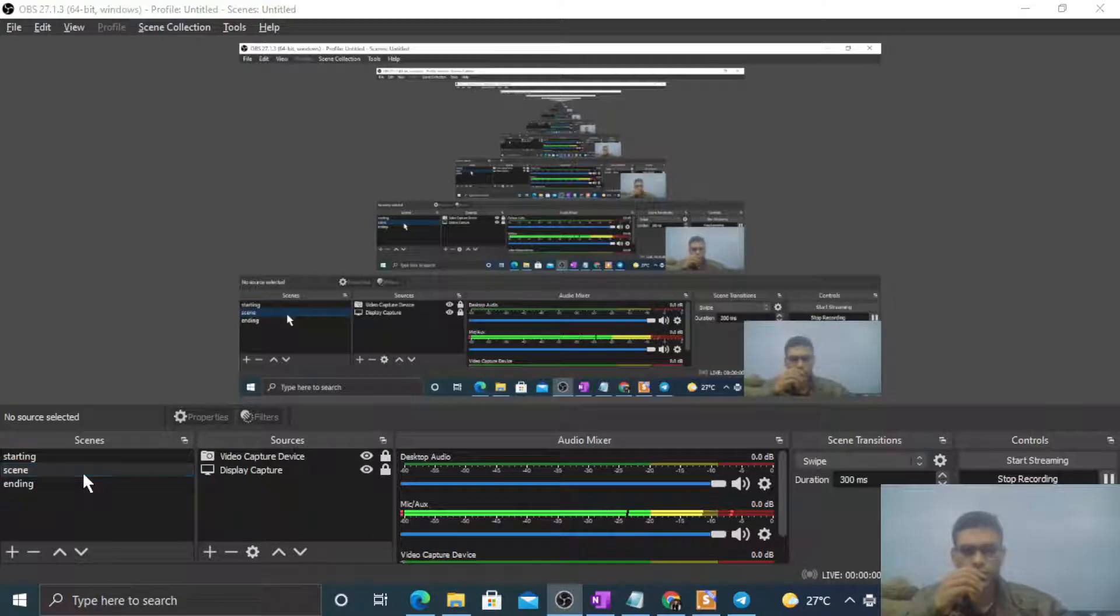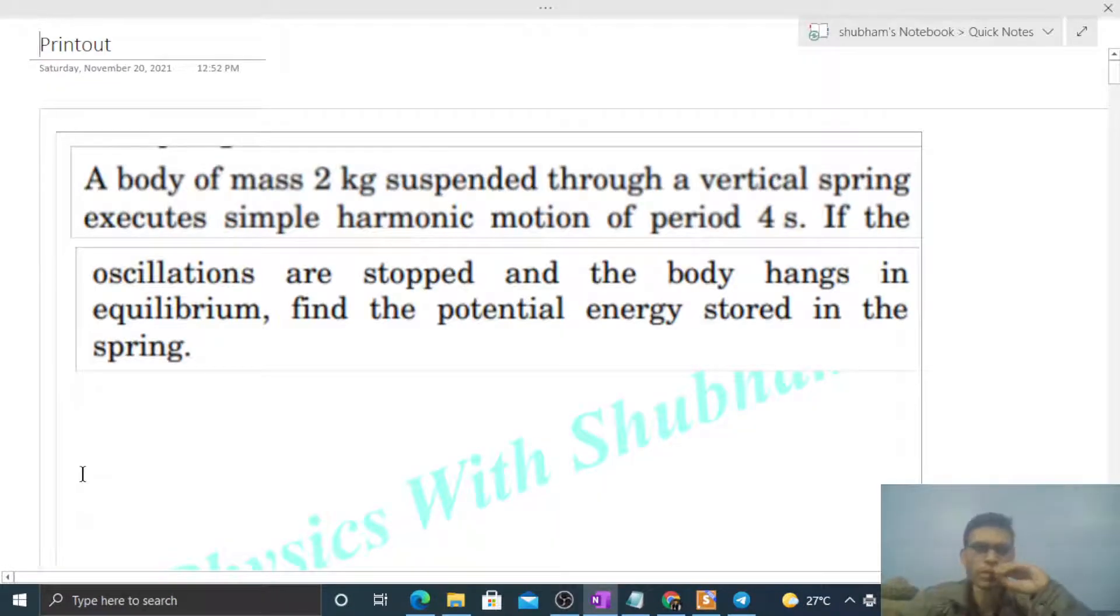Okay, hi everyone. So today let's discuss one interesting problem. It says a body of mass 2 kilogram suspended through a vertical spring executes a simple harmonic motion of period 4 seconds. If the oscillations are stopped and the body hangs in equilibrium, find the potential energy stored in the spring.